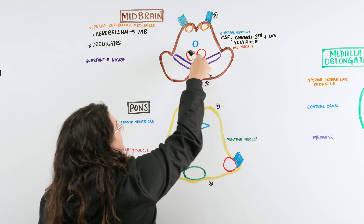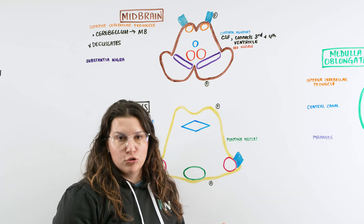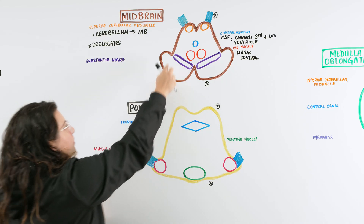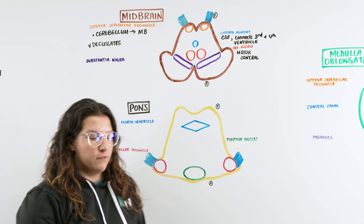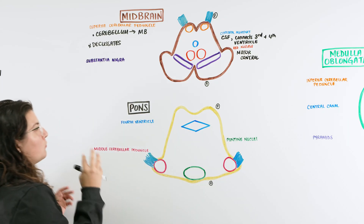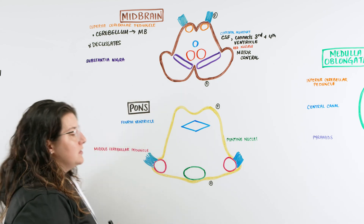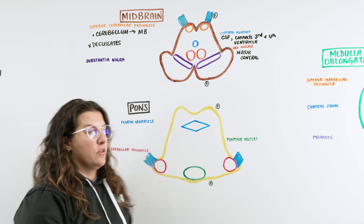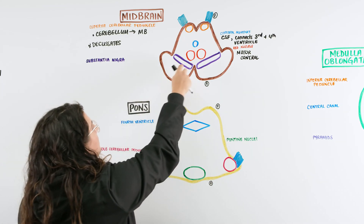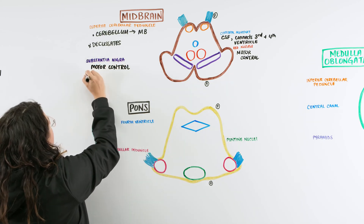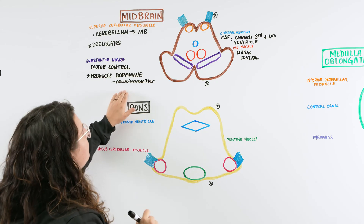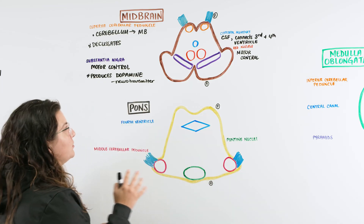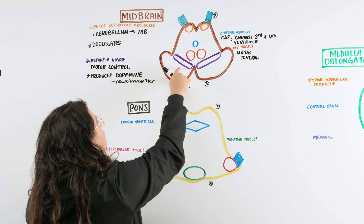The red nucleus, located here, has one of its main purposes in motor control — the ability to control our movements. The substantia nigra, shown in purple, allows for smooth motor control. Its most important job is the ability to produce dopamine, which helps with controlling movements, mood, and cognitive function. When we think of the substantia nigra, think of the neurotransmitter dopamine. This is clinically significant because dopamine production issues in this area are linked to Parkinson's disease.